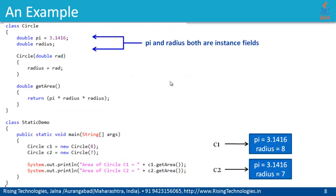Let's have a practical look at where we can make use of static members. Look at this circle class. Within this class, I have two fields: pi and radius. There is a constructor which receives radius as a parameter and assigns it to the radius field. There is a getArea method which returns the area of the circle using the formula. Now, pi as well as radius are both instance fields. That means if I declare 10 instances of this class, there will be 10 copies of radius as well as 10 copies of pi.